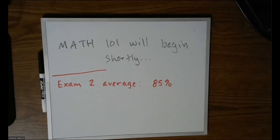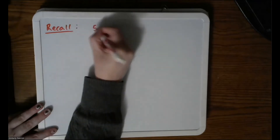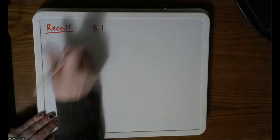I want to continue our discussion with section 5.2. If you recall, before our exam we began discussing 5.1 and 5.2 in a combined lecture. Now I want to get into more detail with 5.2, so let's just do a quick recap. Recall from 5.1, we introduced the general formula for a polynomial — let's call this a definition.